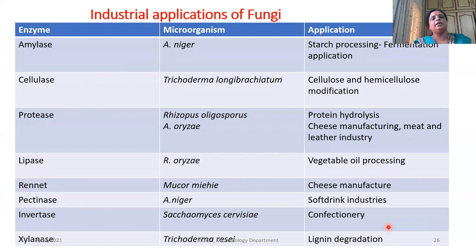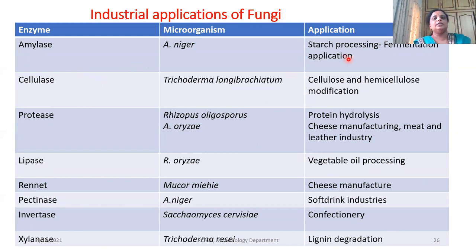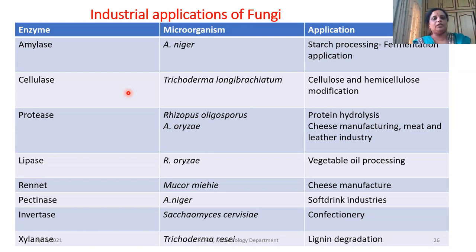Apart from their application in producing organic acids, alcohol, or pharmaceutical products, fungi are extensively used in the production of various enzymes. Amylase is an enzyme which has an ability of breaking down starch into simpler form — Aspergillus niger is a very good example of an amylase producer. We also have cellulase enzyme, produced by many organisms with an ability of breaking down cellulose into simpler units. A very good example is Trichoderma species; Aspergillus and Penicillium species also produce cellulase.